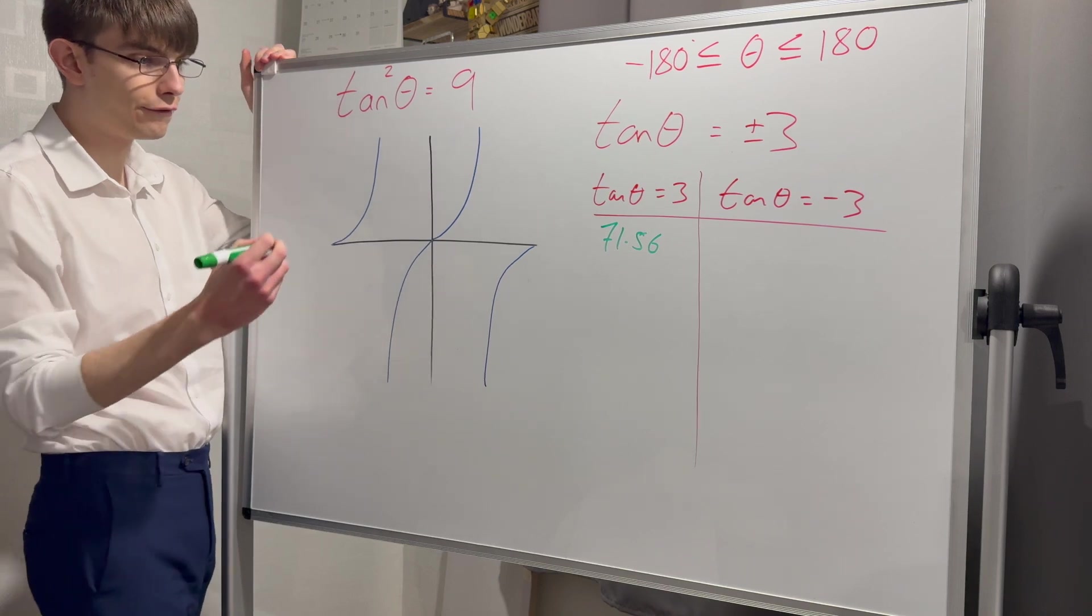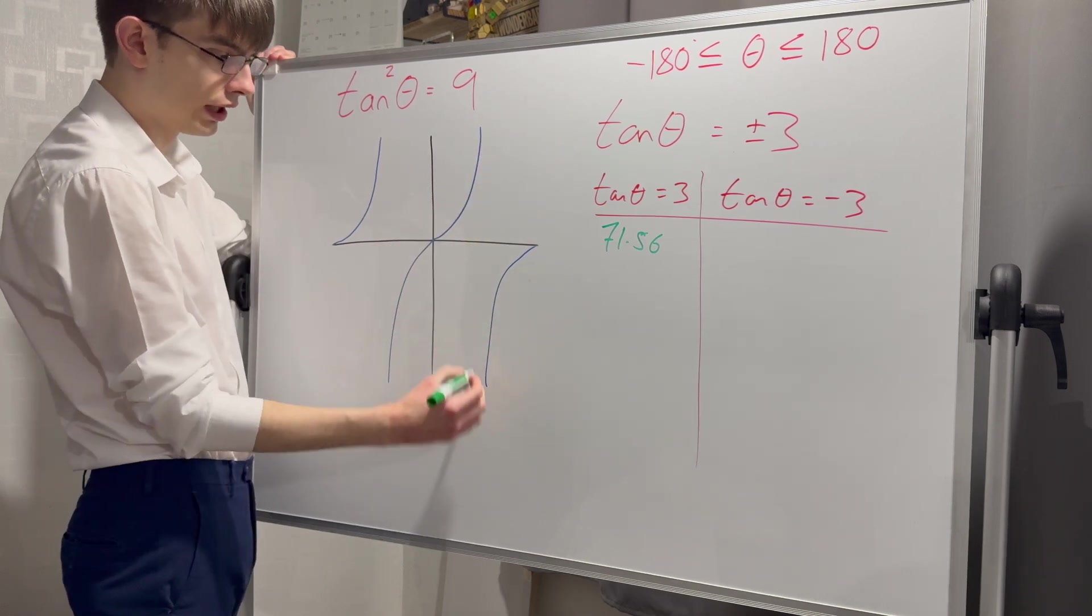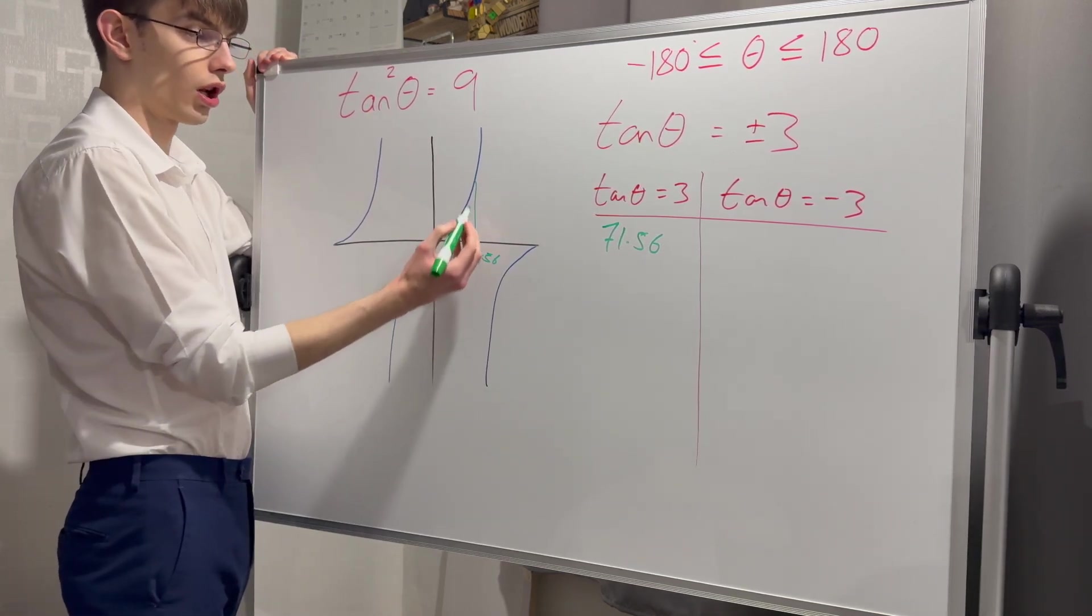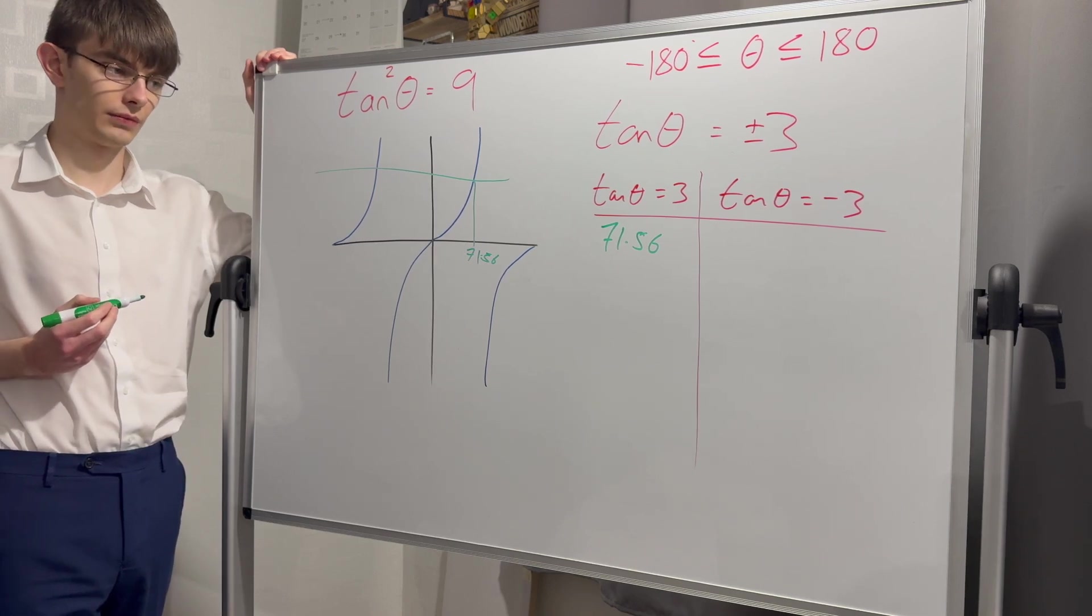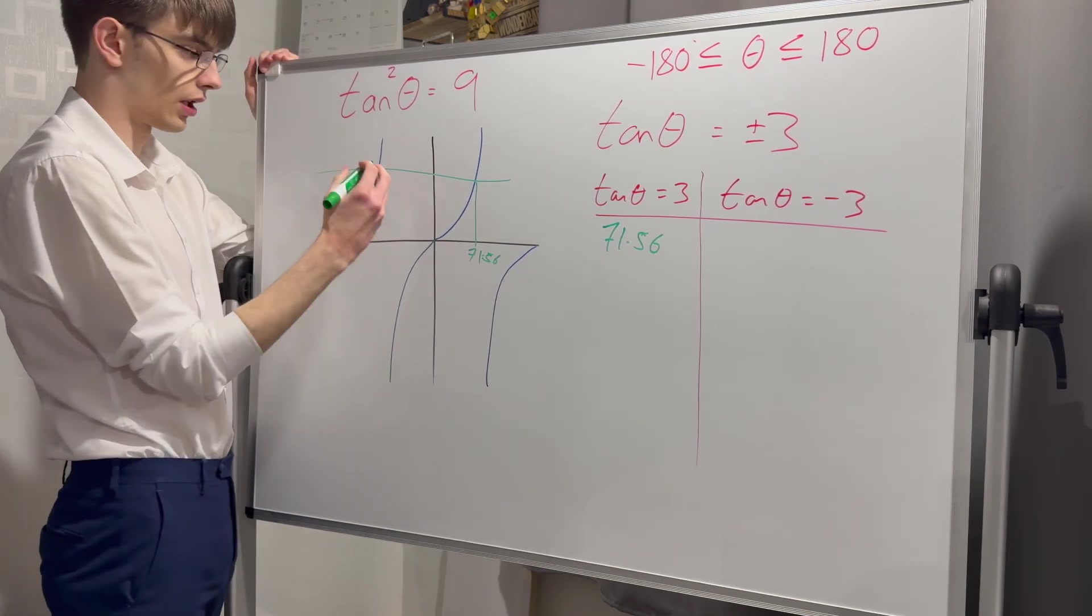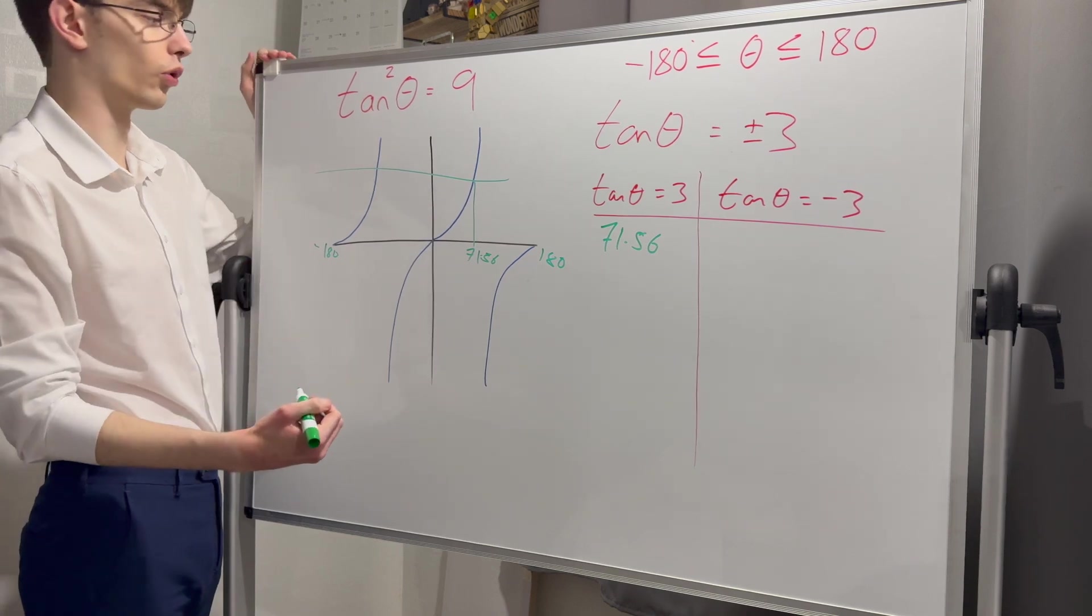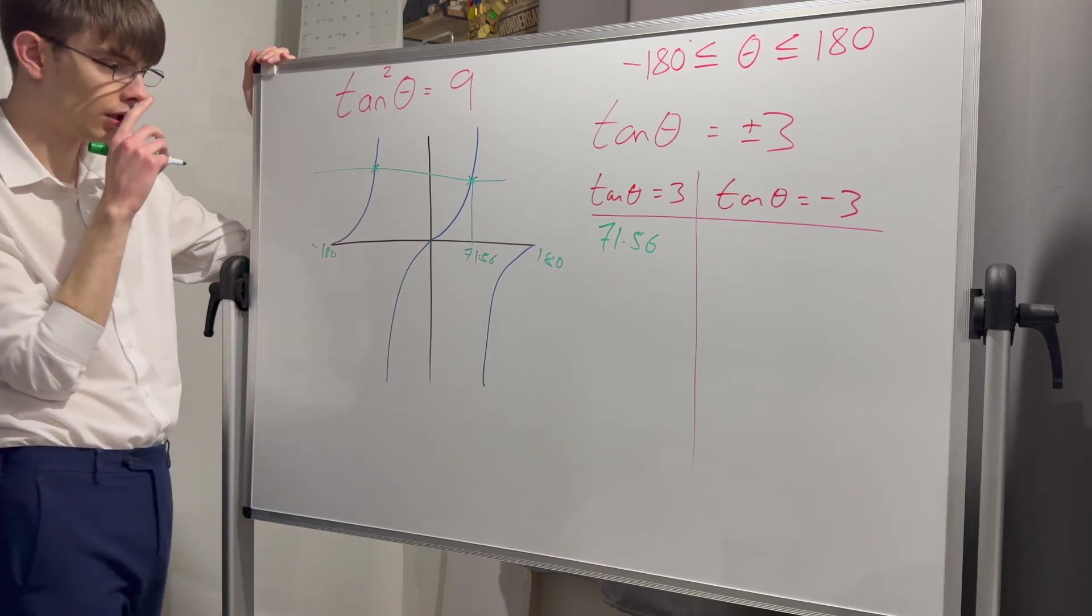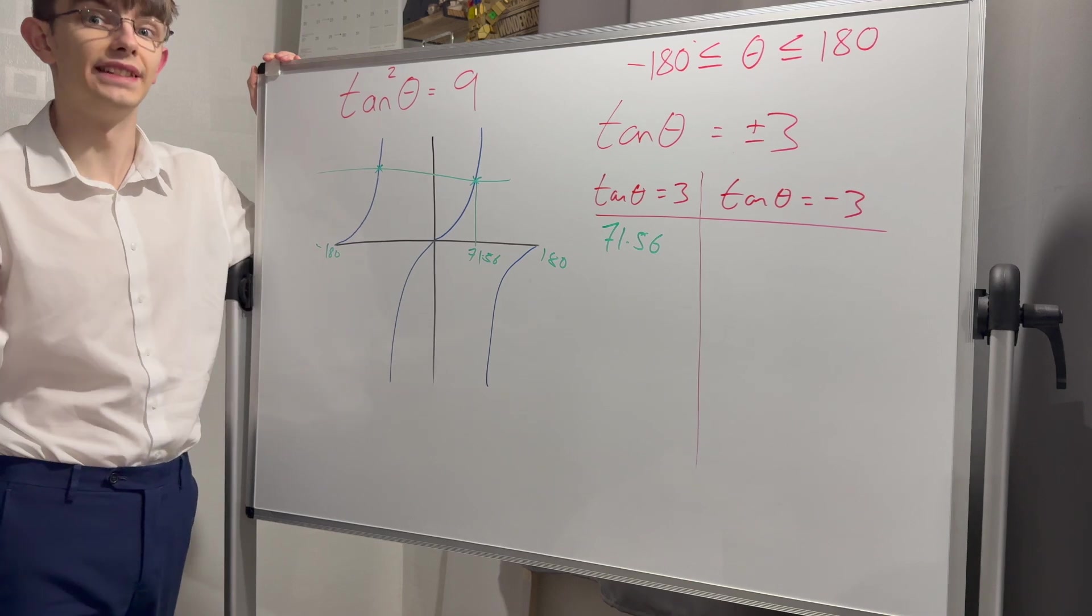Let's start off with tan theta equals three. Step one, get my calculator and get my principal value. Tan inverse of three gives me 71.56 degrees. I'm going to find 71.56 on my graph. I've got an asymptote at 90, so 71.56 is about here. Drawing a line up to this graph, I'm going to draw my horizontal line across.